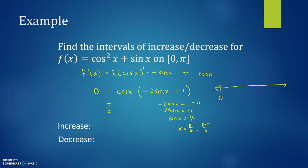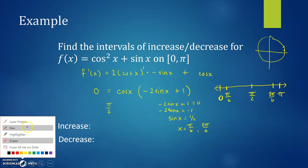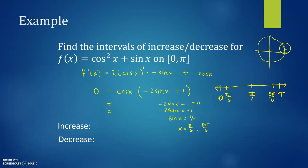Now I'll check F prime using a number line with endpoints included. The unit circle is really helpful here. Marking π/6, π/2, and 5π/6 on the number line: between 0 and π/6, sine is smaller than 1/2, so (−2sin x + 1) is positive, and cosine is also positive — so F prime is positive on this interval.